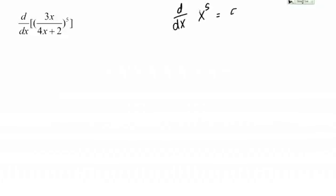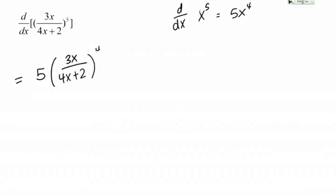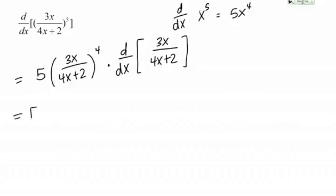If we have x to the 5th and take the derivative, that's 5x to the 4th. I'm going to do the same here, but I need the chain rule because it's not just x raised to the 5th — it's this entire quantity. The chain rule says start by taking the derivative of the outer function and leave the inner function inside. So I pull the 5 down front and leave the inner function 3x over 4x plus 2 raised to the 4th intact. Then the chain rule says I need to multiply by the derivative of 3x over 4x plus 2.